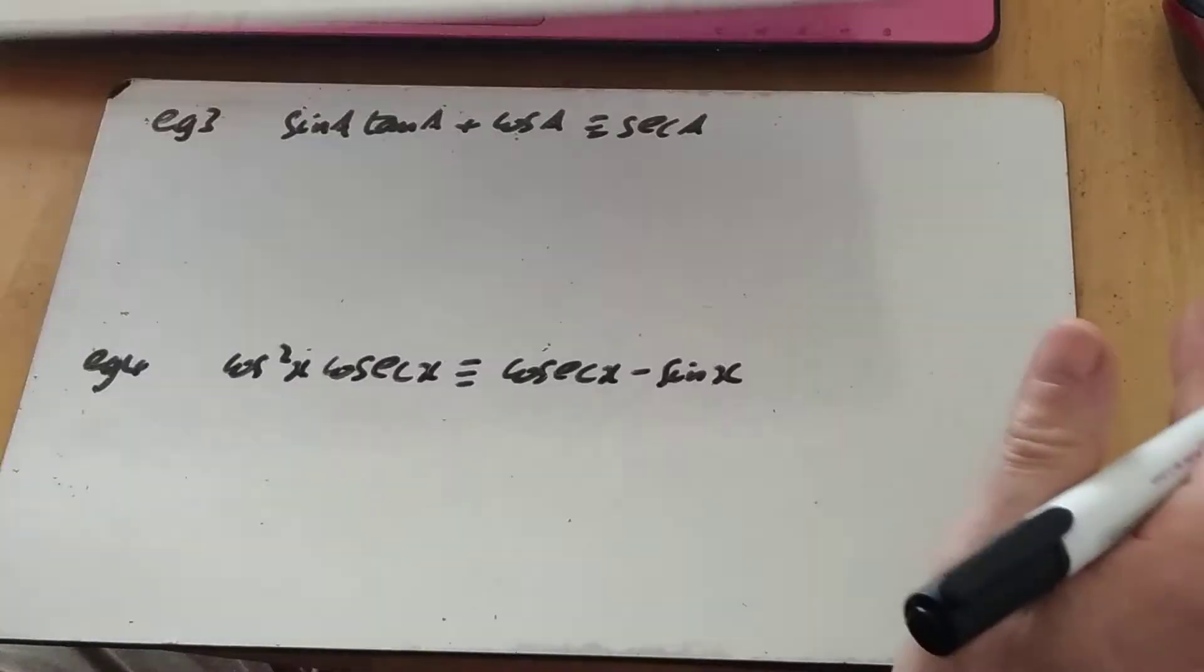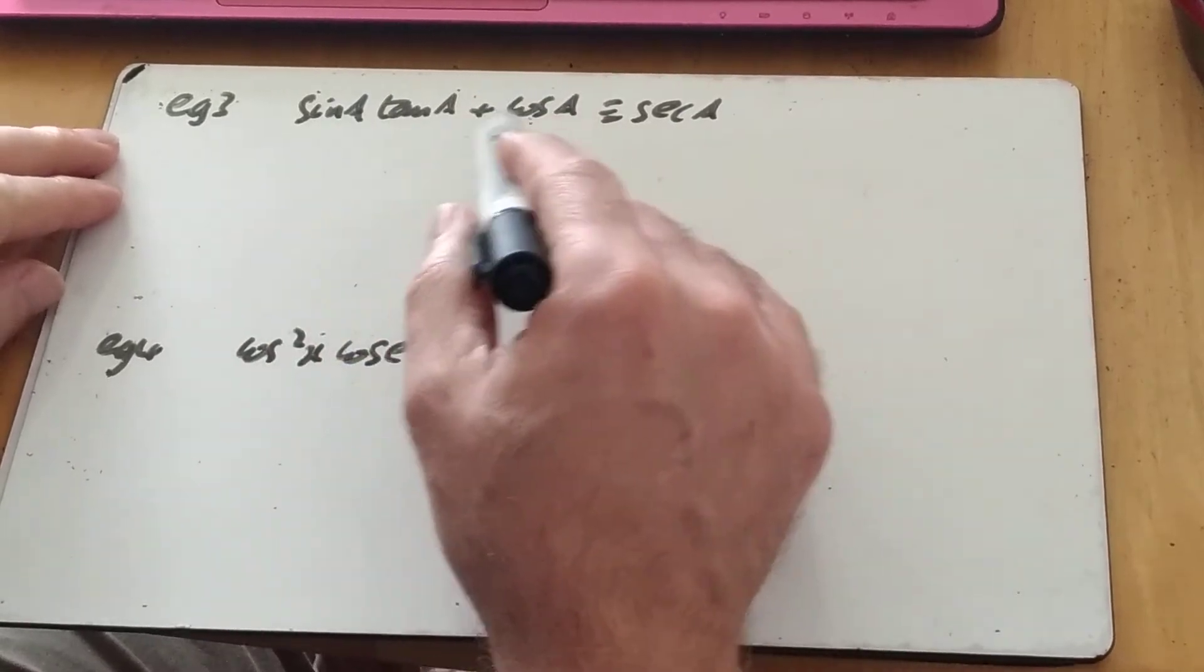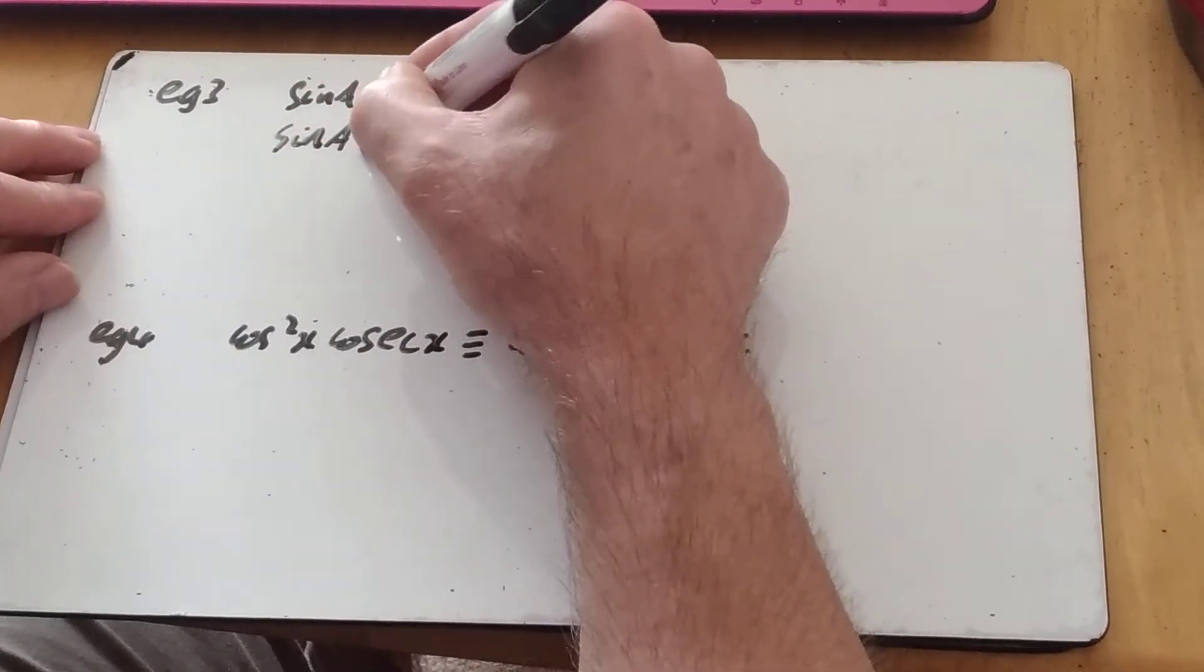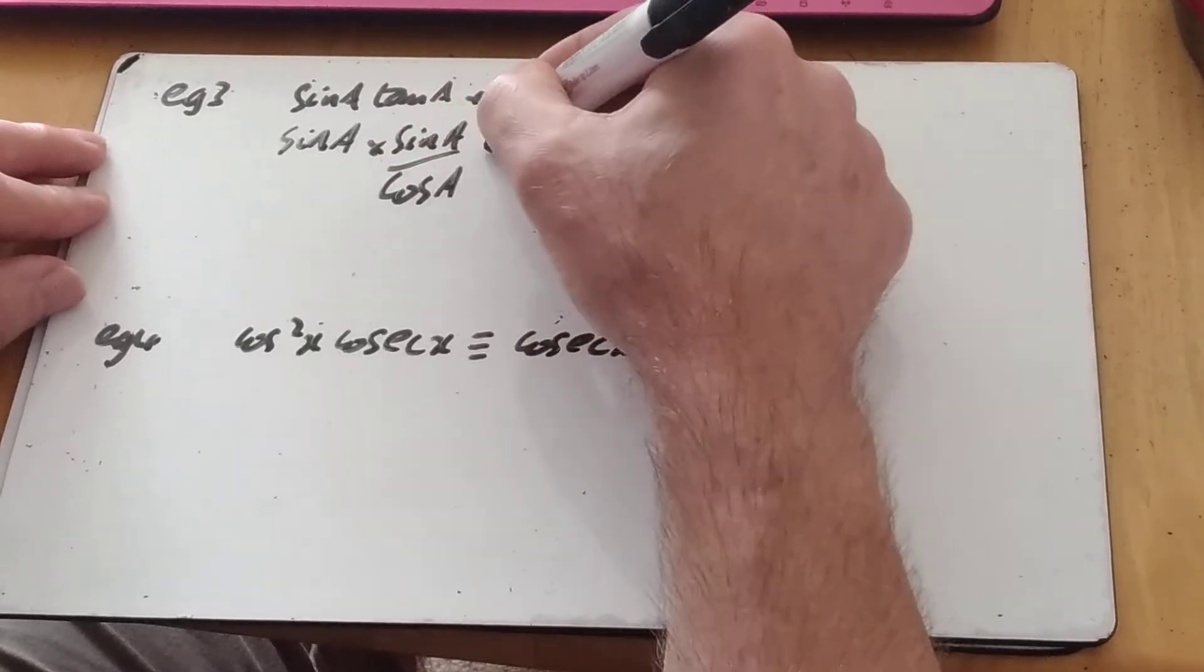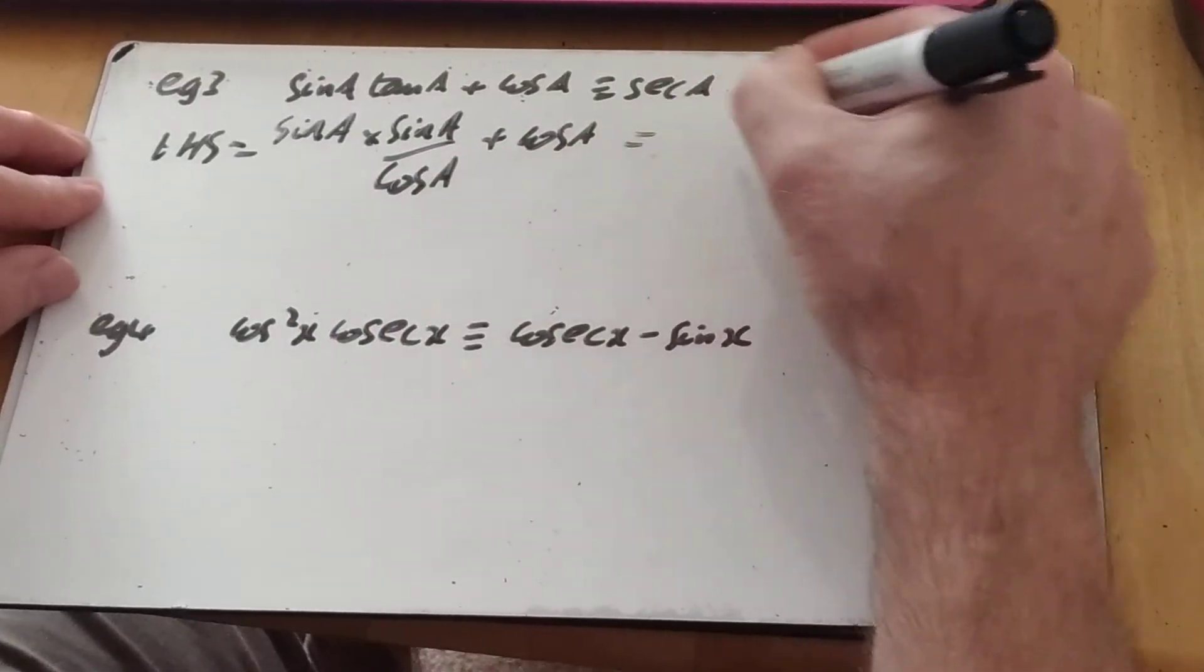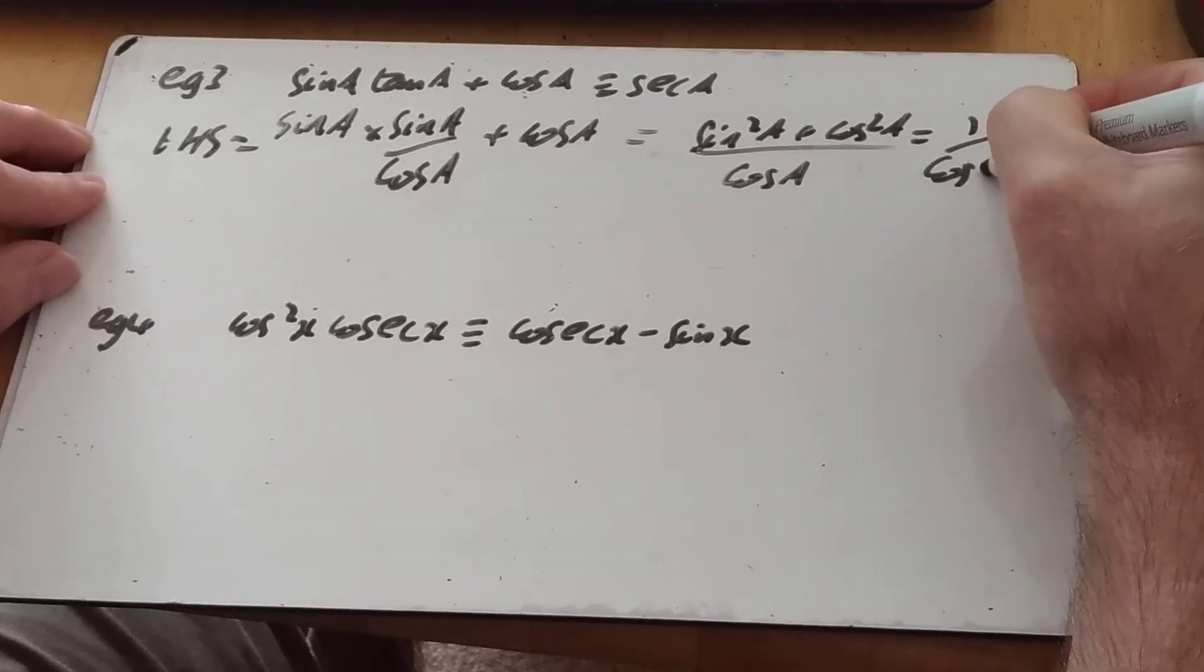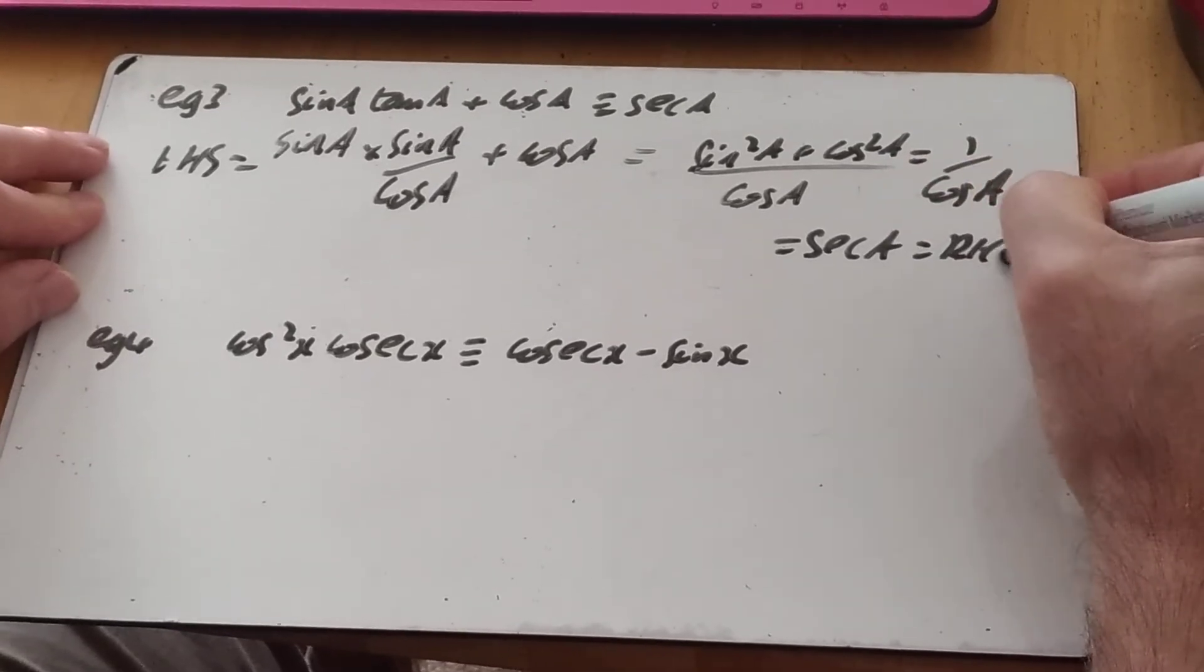Let's have a look at a couple more then. Sine tan plus cos is equivalent to sec. Yet again, I've got more than one term there. I'm probably going to be sticking everything on the common denominator and seeing what happens. So I can rewrite everything in terms of sine and cos. It's very similar, I think, to the first example. So that's my left-hand side there. Put it under common denominator of cos a, and guess what I get? I get sine squared plus cos squared again, which is 1 over cos, which is sec, and that's my right-hand side. Okay?